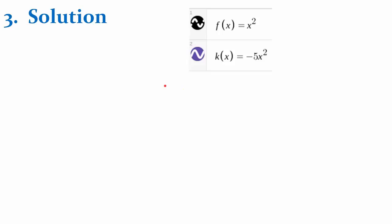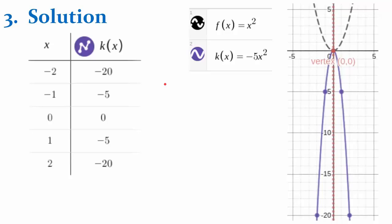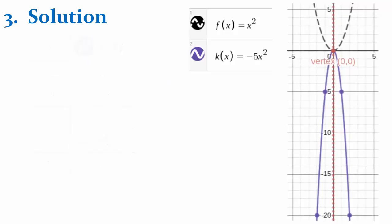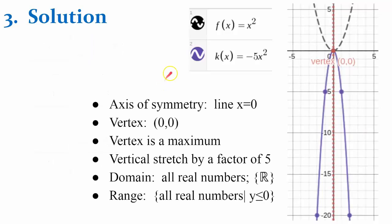And your number three solution. Create your table of values. Plot your points. And compare. We have this is a reflection in the x-axis. Vertical stretch by a factor of five. The domain is all real numbers. And the range is all real numbers y less than or equal to 0 here.